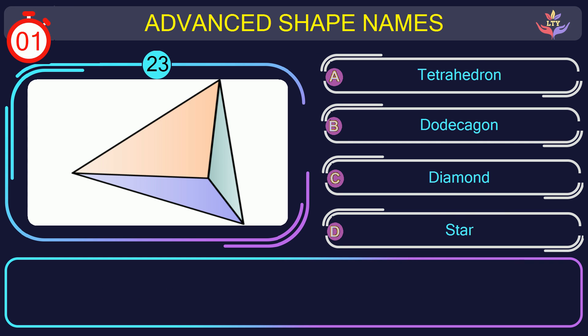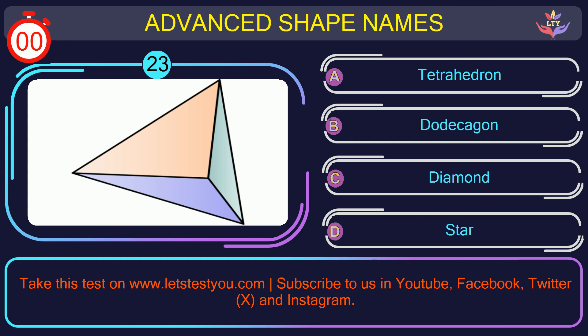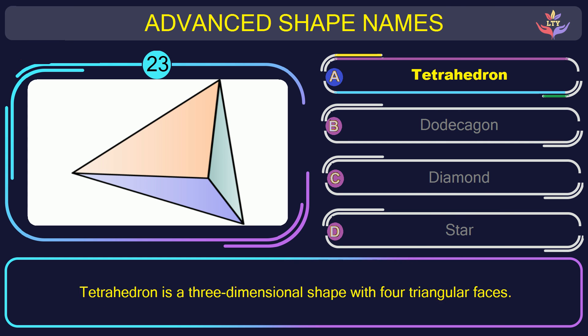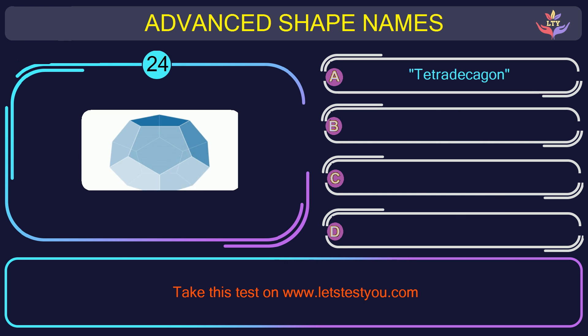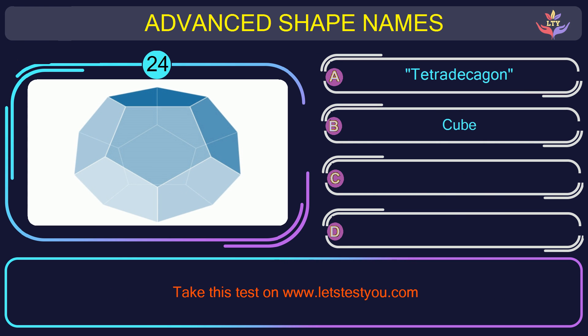Question number twenty-three. Find the name of the shape in this picture. The correct answer is option A. Tetrahedron. Tetrahedron is a three-dimensional shape with four triangular faces.